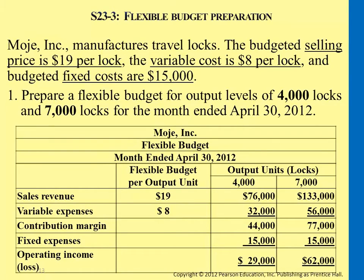At the end, we select a certain level and put it in the middle. So it's not just about comparing static and actual — we want to know specifically: is it because of sales volume differences, or is it because of the variable expenses spent on each unit, or fixed expenses?